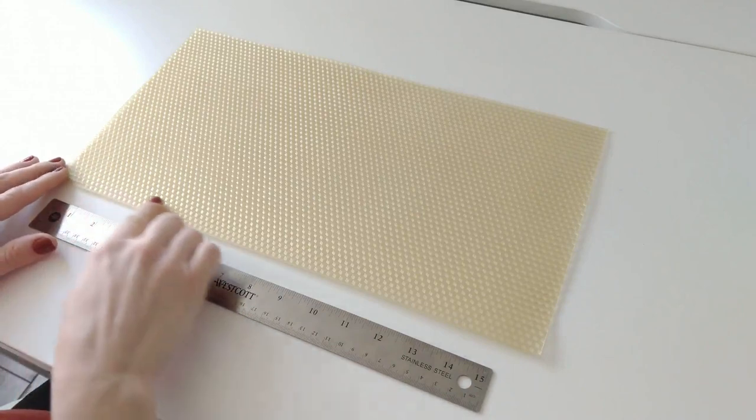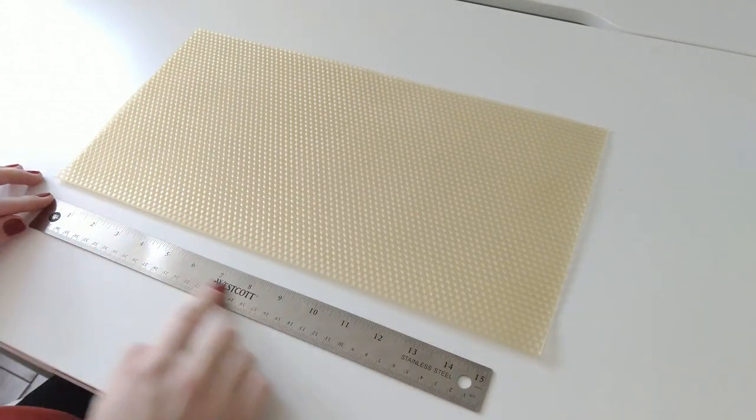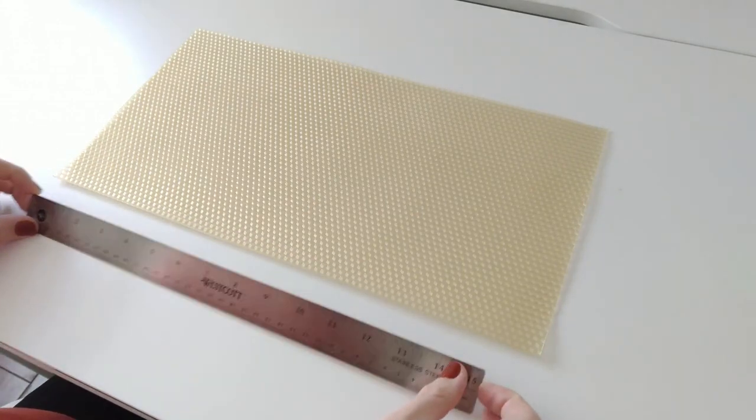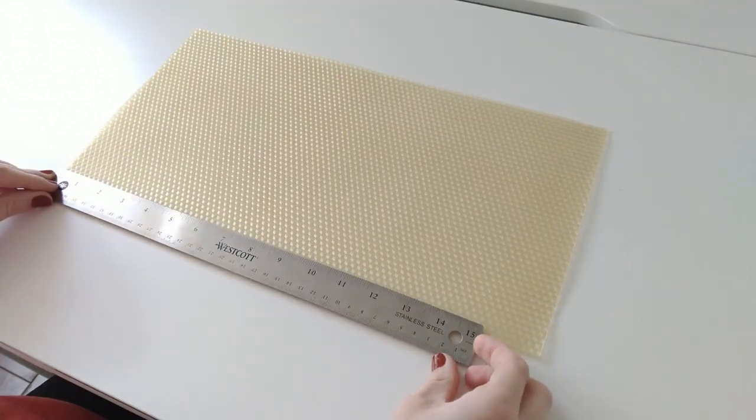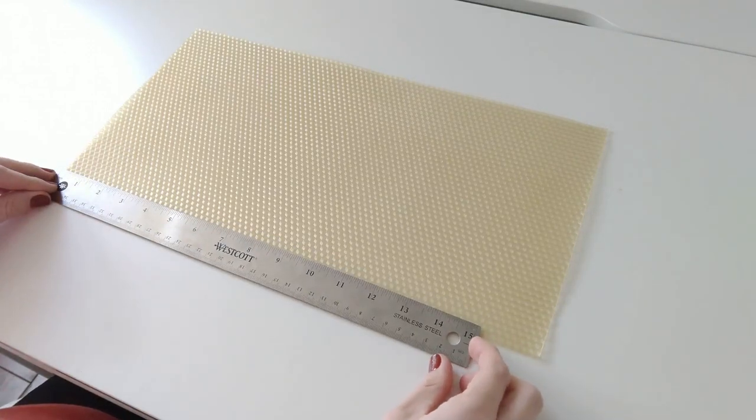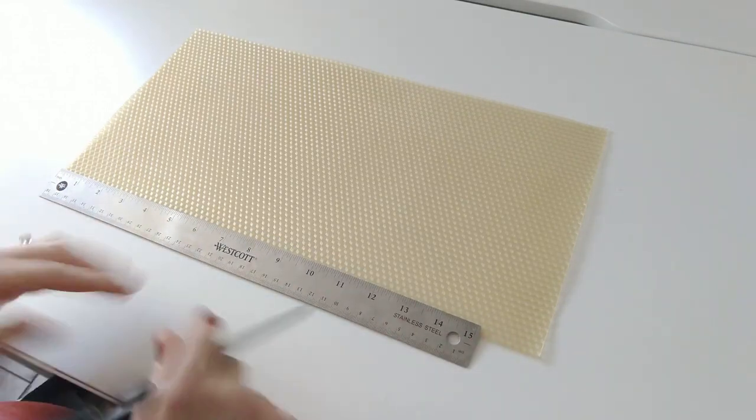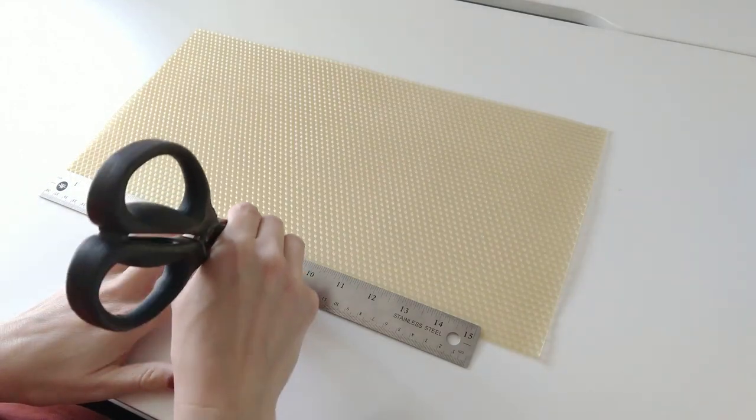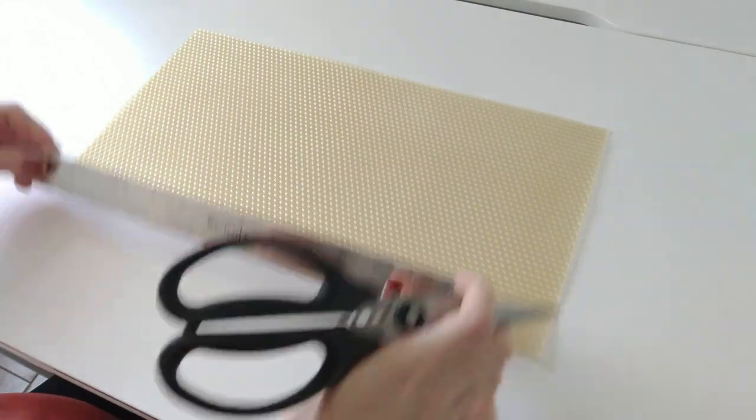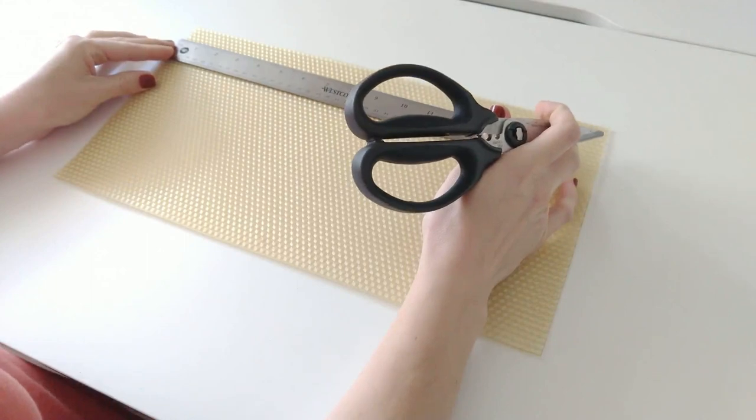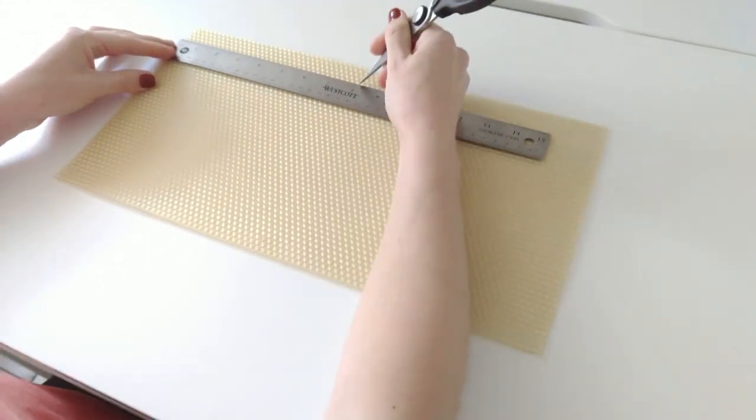We are going to start by measuring and cutting our wax sheets. This first candle will be a taper candle. A standard taper candle measures seven eighths of an inch in diameter at the base of the candle. With these sheets that I linked in the box below we'll get that candle width by cutting the sheet about eight inches long.